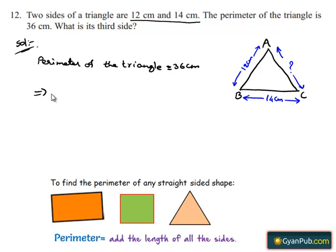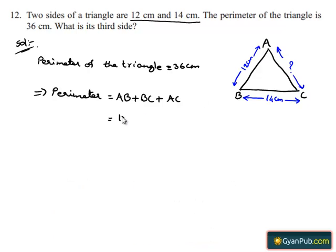This implies perimeter is equal to length of side AB plus length of side BC plus length of side AC. This is equal to 12 cm plus 14 cm plus AC.